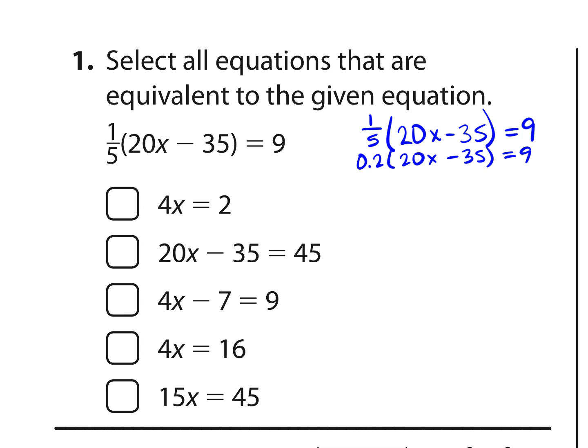We could change one-fifth to a terminating decimal 0.2 just to make our calculations a little simpler. And so I'm going to distribute or multiply 0.2 by each term. So 0.2 times 20x is 4x. 0.2 times negative 35 is negative 7, and this is equal to 9. Notice that we actually have that equation right here, answer choice C. So I know it's equivalent. I could also go through and continue solving this and add 7 to both sides. And we find that 4x is equal to 16. Notice that that is answer choice D.